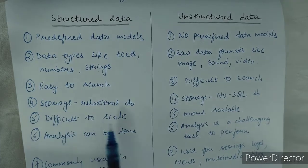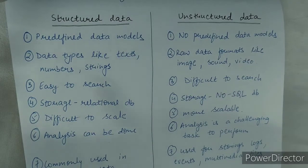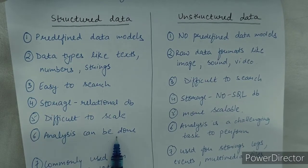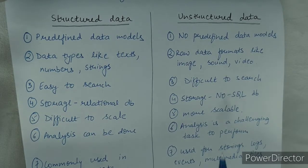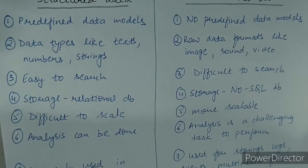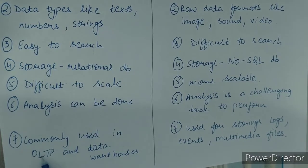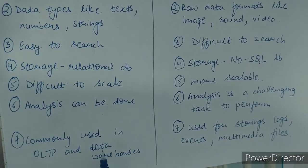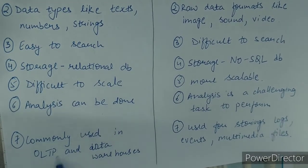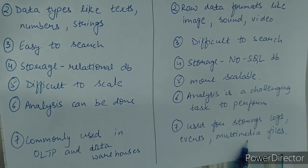Structured data is difficult to scale, and unstructured data is more scalable — that is why we use MongoDB when we need to scale more. For analysis, you can use machine learning algorithms and do future predictions with structured data, but analysis is a challenging task with unstructured data. Structured data is commonly used in OLTP and data warehouses, while unstructured data is used for storing logs, events, and multimedia files.